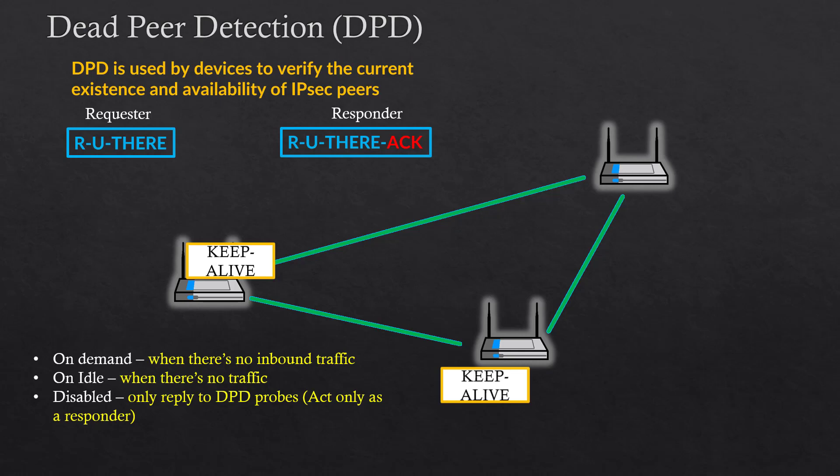It's really important, and I have come across a lot of cases where people had that issue. You have everything set up correctly — the first phase, the second phase, your encryption domain — everything should be working, but it doesn't work. The problem is with DPD, because the other device doesn't support a specific feature or something like that. Details are the problem, so that's why we're here.